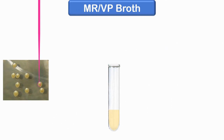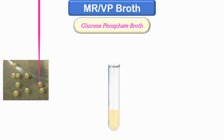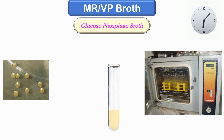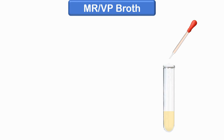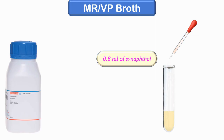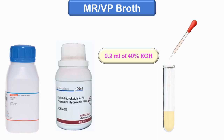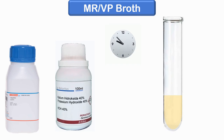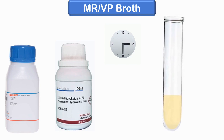For the VP test procedure, we take a test tube containing glucose phosphate broth, inoculate it with the test colony, and incubate at 37 degrees Celsius for 24 to 48 hours. At the end of incubation, add 0.6 ml of 5% alpha-naphthol, then add 0.2 ml of 40% potassium hydroxide. It is essential that the reagents be added in this order. Shake the tube gently to expose the medium to atmospheric oxygen and allow the tube to remain undisturbed for 10 to 15 minutes.